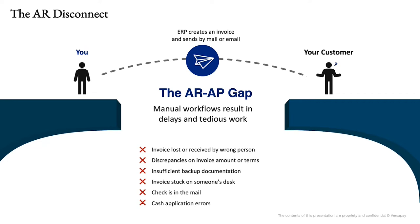Typically we see a process where there's an AR team on the left-hand side sending out invoices to their customer on the right-hand side, be that via email, be that via print and mail, or some other method of delivery. But along the way to that invoice being delivered to the customer, there are potentially lots of things that can go wrong. Maybe the invoice has been lost or it's gone to the wrong person, and there needs to be collaboration back and forth to ultimately make sure it's in the right person's hands on your customer's team.